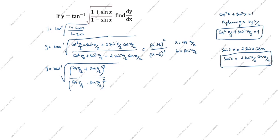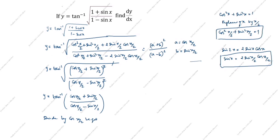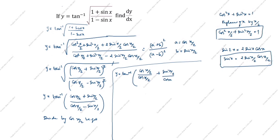The square and the square root cancel each other. Next step: y is equal to tan inverse of (cos(x/2) plus sin(x/2)) divided by (cos(x/2) minus sin(x/2)). Dividing numerator and denominator by cos(x/2), we get (cos(x/2)/cos(x/2) plus sin(x/2)/cos(x/2)) divided by (cos(x/2)/cos(x/2) minus sin(x/2)/cos(x/2)).